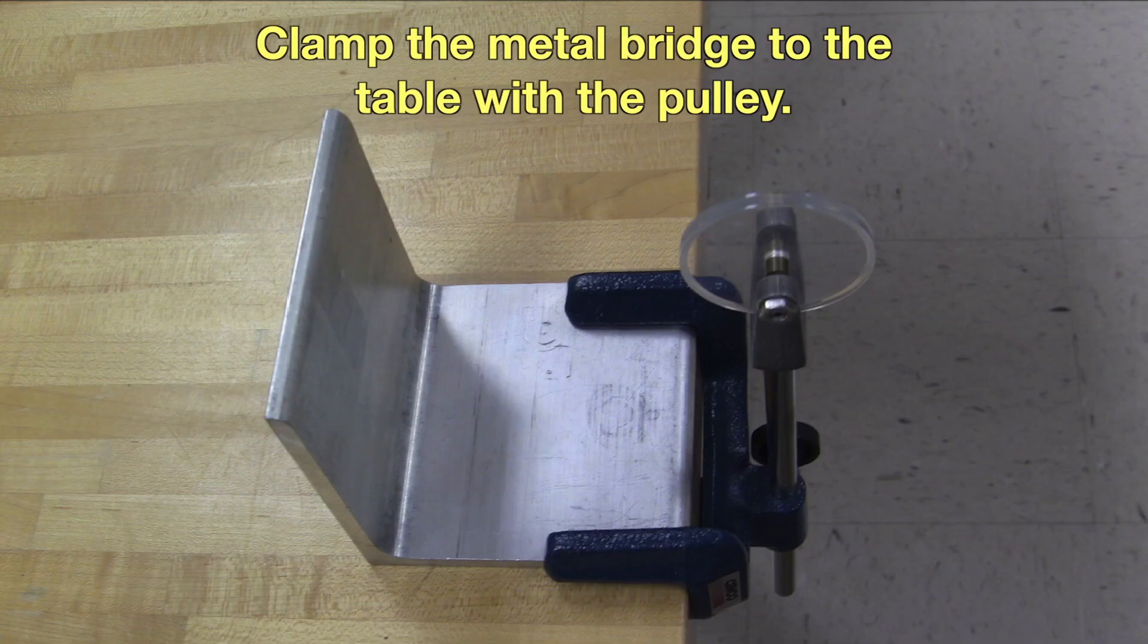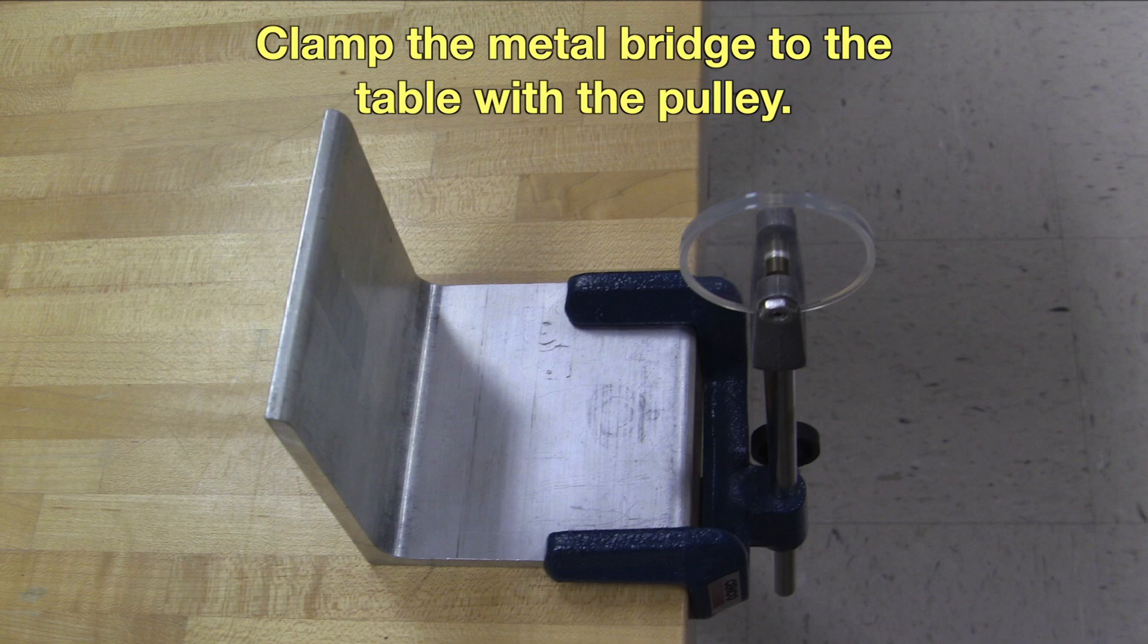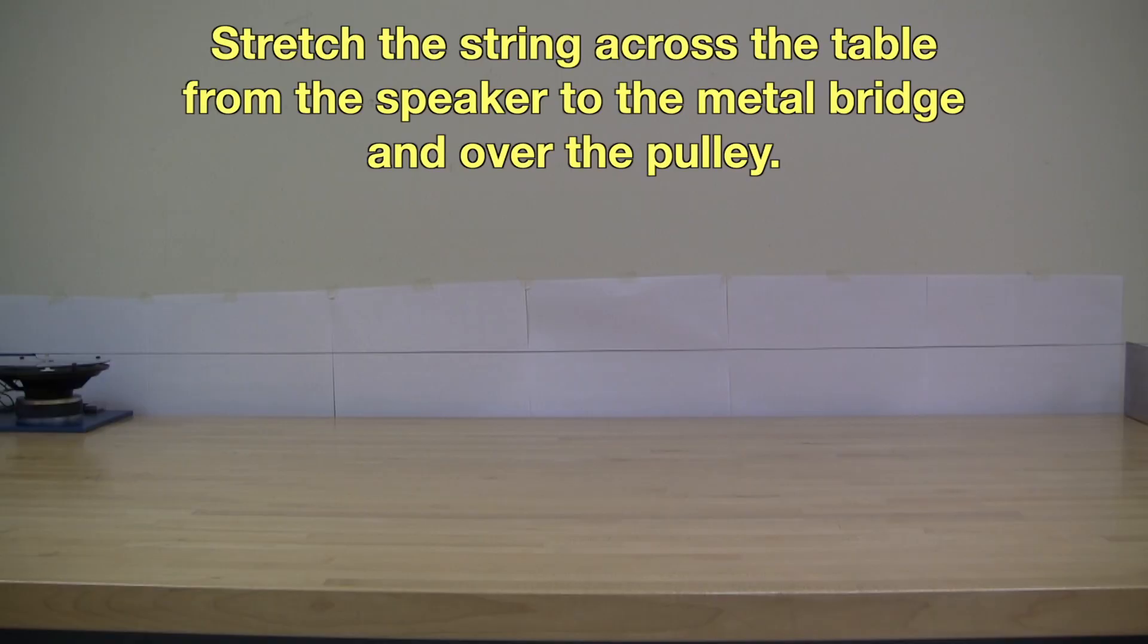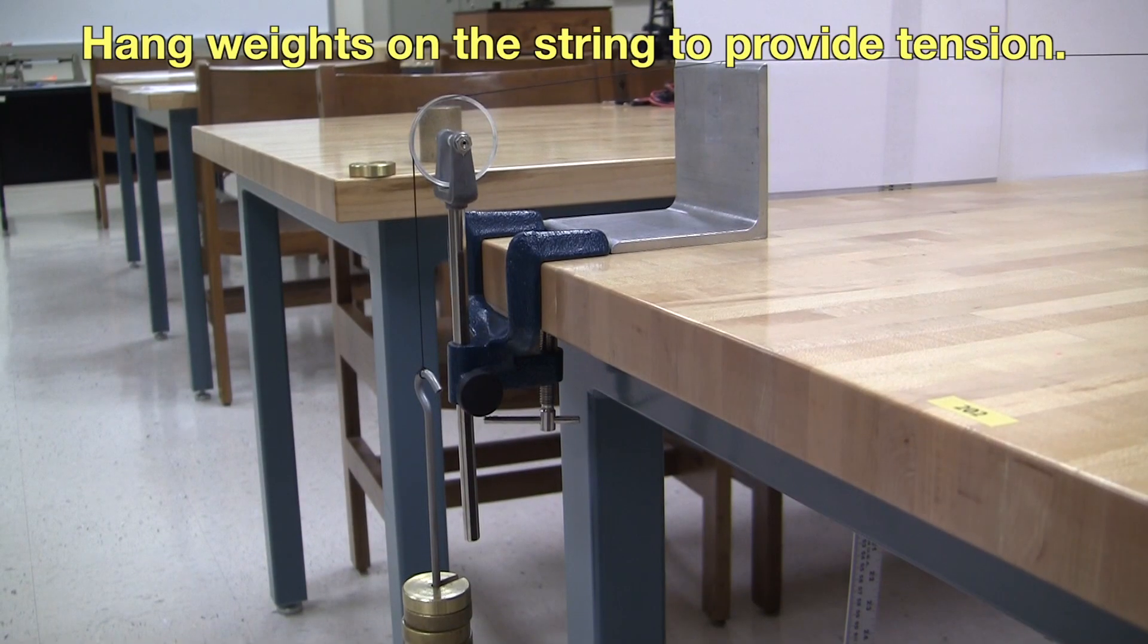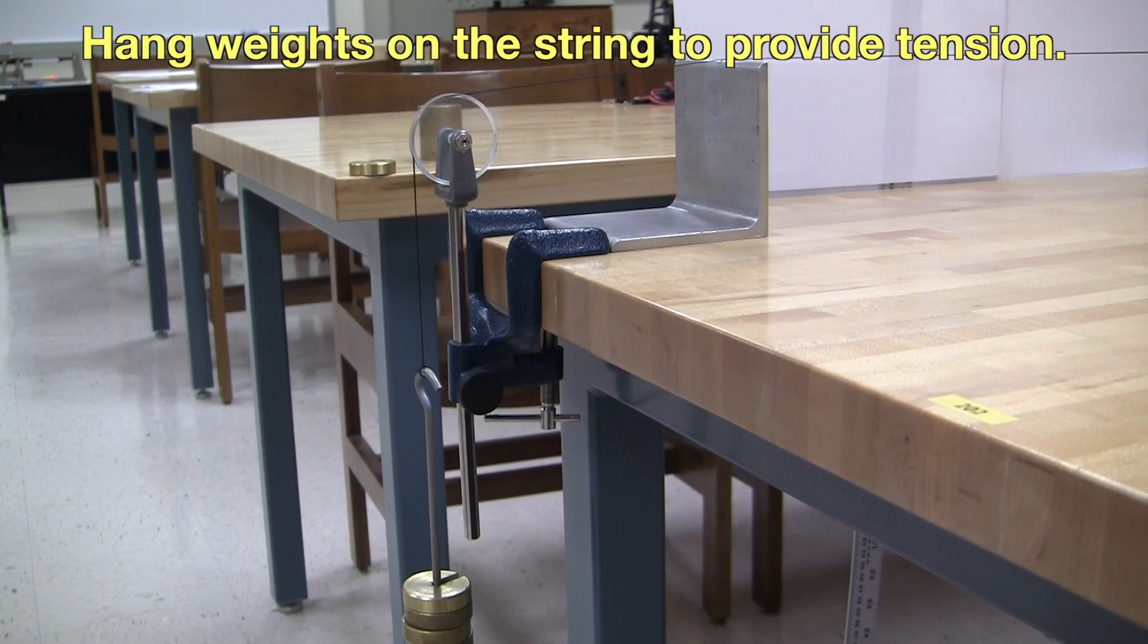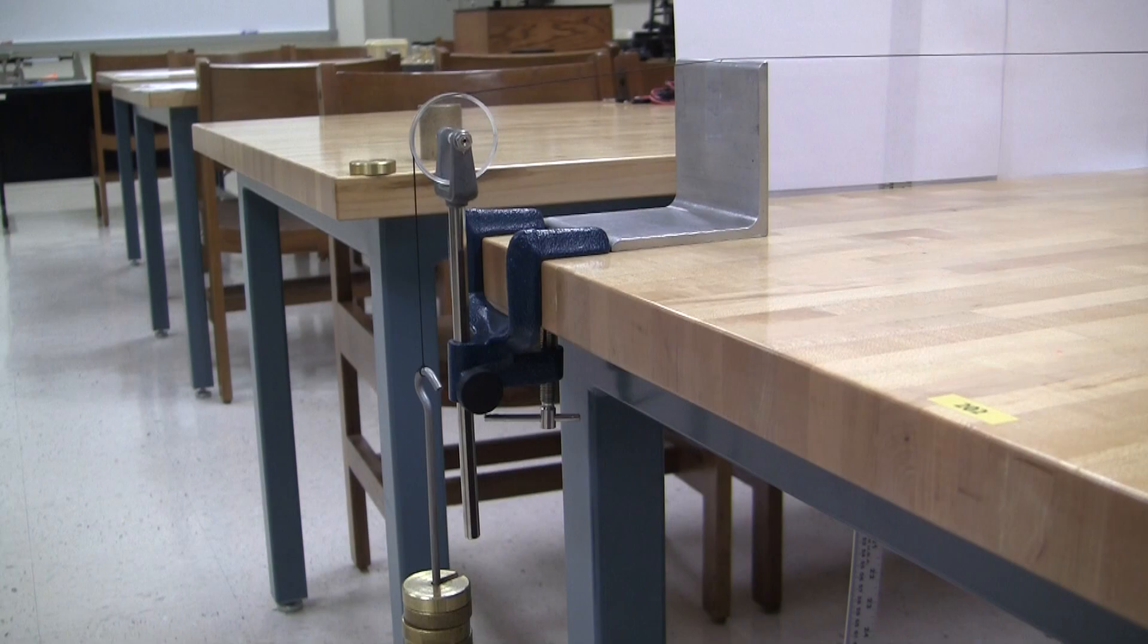Next, clamp the metal bridge to the table with the pulley. Stretch the string across the table over the metal bridge and hang weights from the string. You can change the tension on the string by changing the amount of mass.